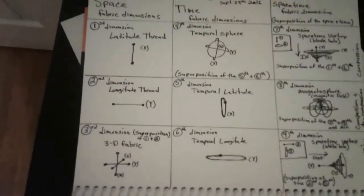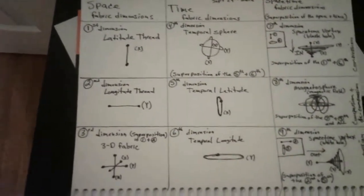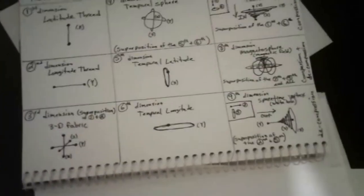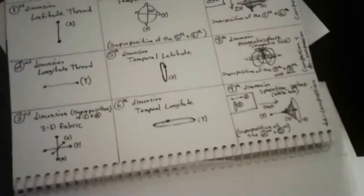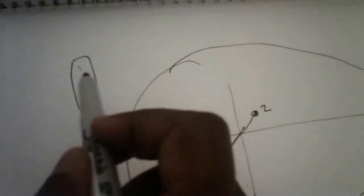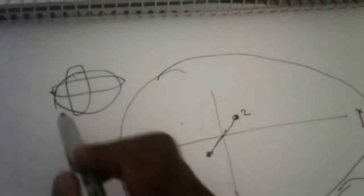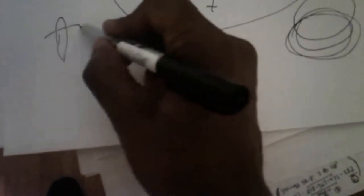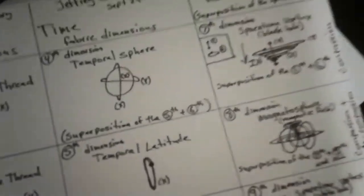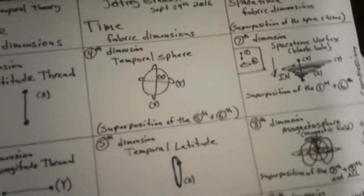I did the same thing for temporal longitude — I connected both ends and I got a loop. Just like we did with both of these in God's superposition, you take latitude and longitude, put them together, you get a sphere. You take two loops, two rings, and if you put both of those together you're going to get a sphere. And that would be the superposition.